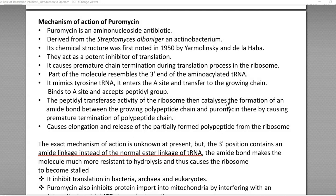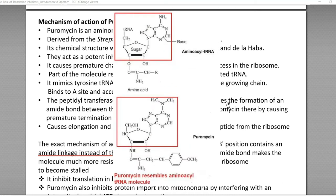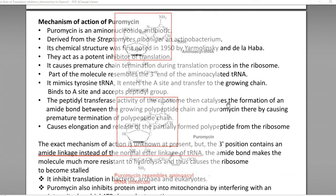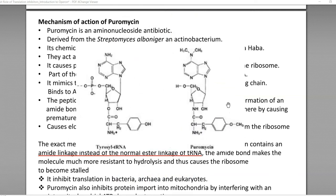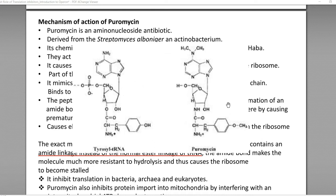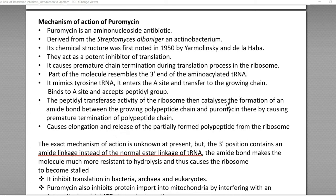Puromycin acts as a potent inhibitor of translation, causing premature chain termination during the translation process in the ribosomes. A part of the puromycin molecule resembles the 3-prime end of the aminoacyl-tRNA molecule — it mimics tyrosine-tRNA. Thus, it enters the A site, binds there, accepts the peptidyl group, and the peptidyl transferase activity of the ribosome catalyzes bond formation between the growing polypeptide chain and puromycin.